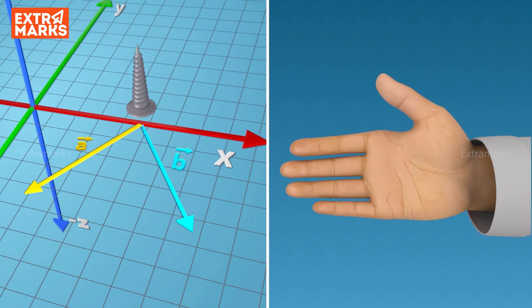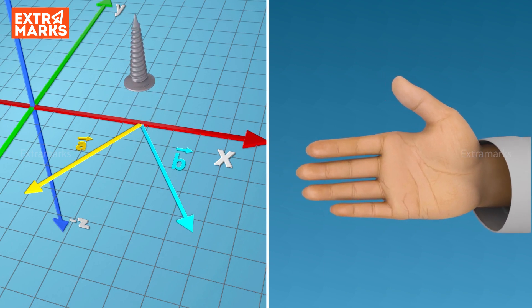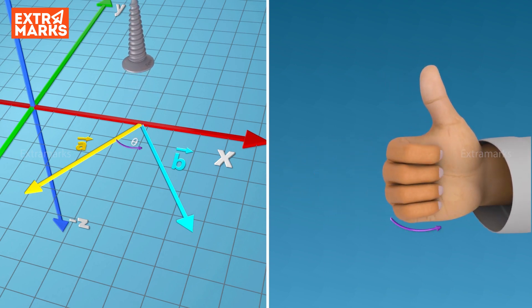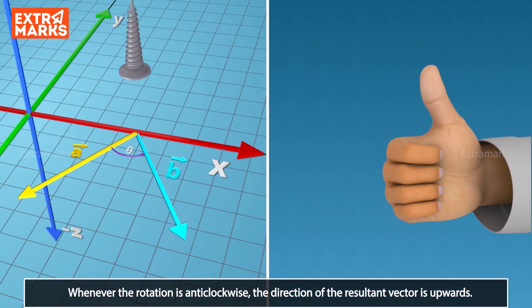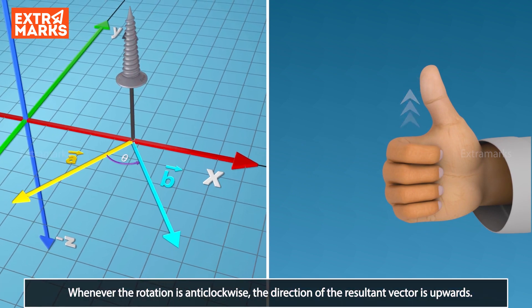Open the palm of your right hand and curl the fingers in the direction from A to B. Your stretched thumb points in the upward direction, which is the direction of vector C, i.e. vector product of A cross B.